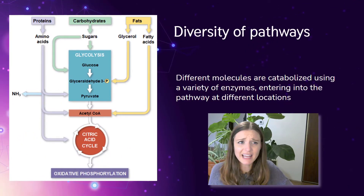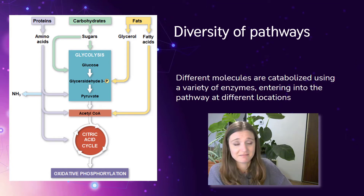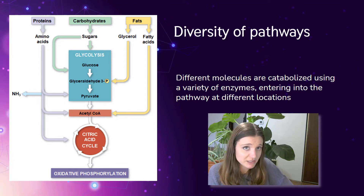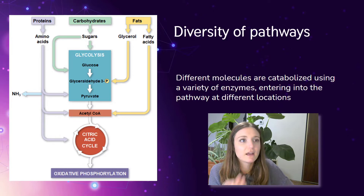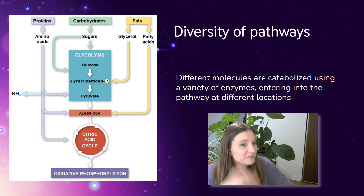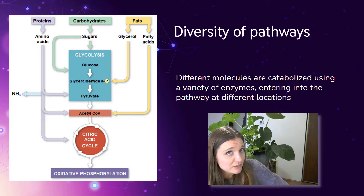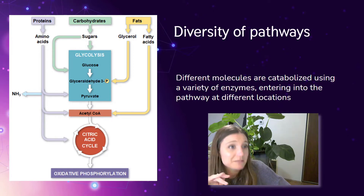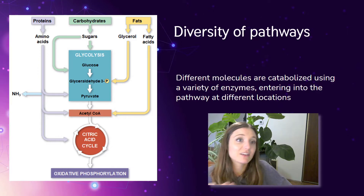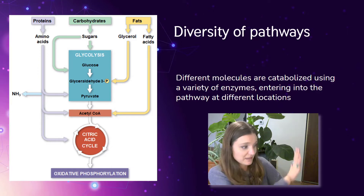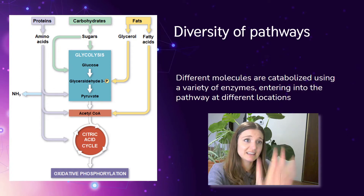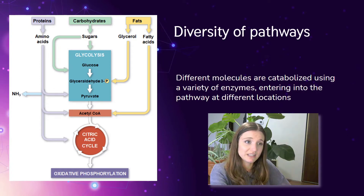We have many different catabolic pathways that the different macromolecules can go into. They all end up eventually in the citric acid cycle, but depending on what it is, there'll be different enzymes that catalyze the reaction of getting that molecule into this process of cellular respiration.